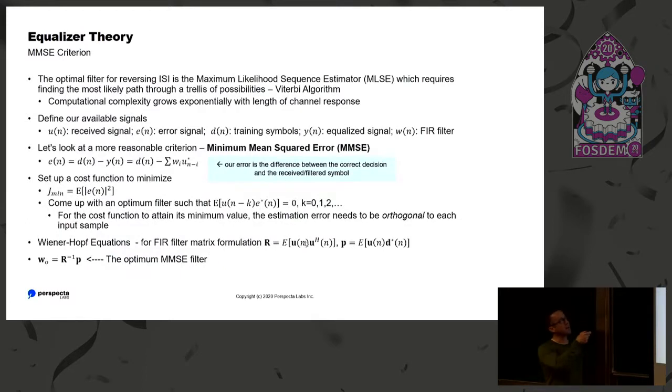So we need another criterion. The optimal way to back out of your channel response is through a maximum likelihood sequence estimation. You do that by tracing what you receive through the trellis of possible states, and then you use the Viterbi algorithm to find that maximum likelihood sequence. That's very computationally intensive. It's probably not something you would do in practice necessarily. So what we want to do is we want to look at the minimum mean squared error criteria for this problem.